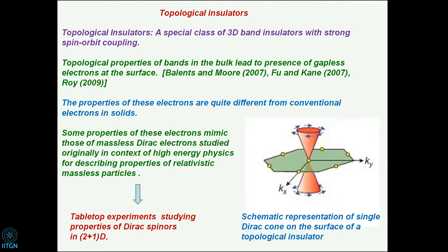Now let me get into topological insulators. The spin Hall effect was understood in 2D, and people then wanted to figure out if there is an analog in 3D. This is different from the 2D case because in even spatial dimensions you can define things called Chern numbers.